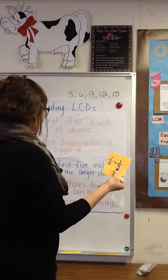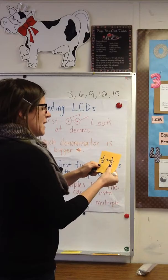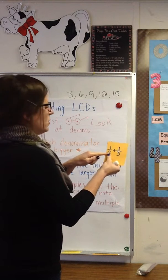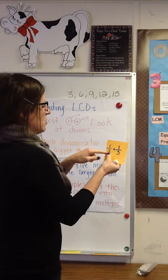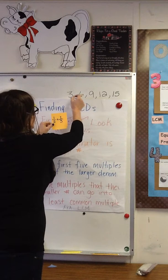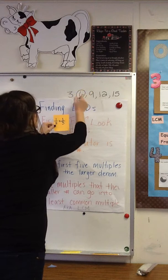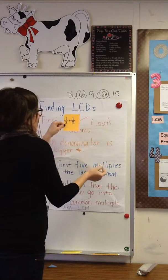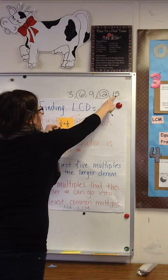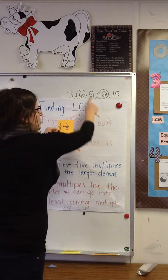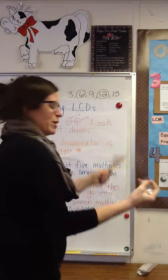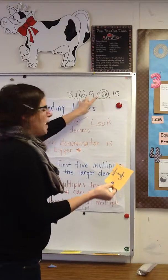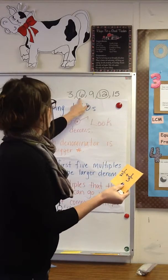Now the last step is I have to look at my smaller denominator and decide which of those numbers two can go into. So I look and I say: can two go into three? No. Can two go into six? Yes. Can two go into 12? Yes. It cannot go into nine or 15 because those are odd numbers, and two splits in half. So right now I have common multiples for two and three right here.